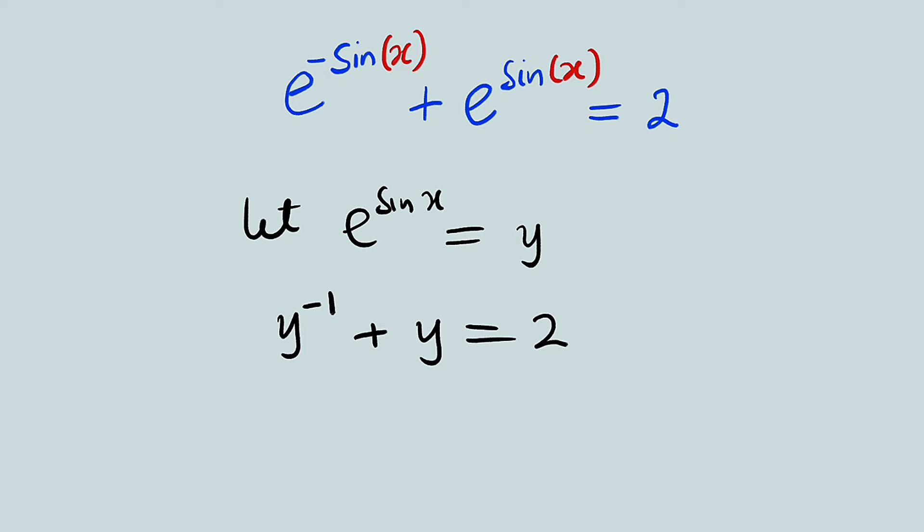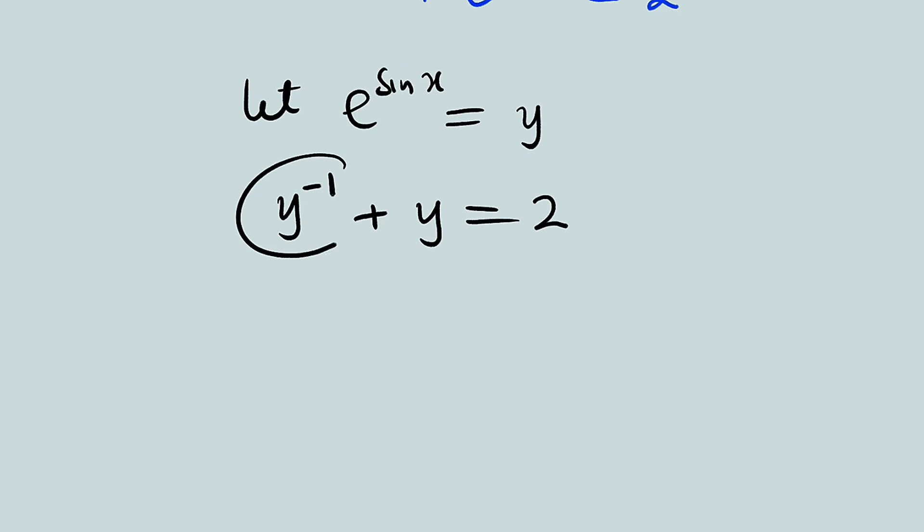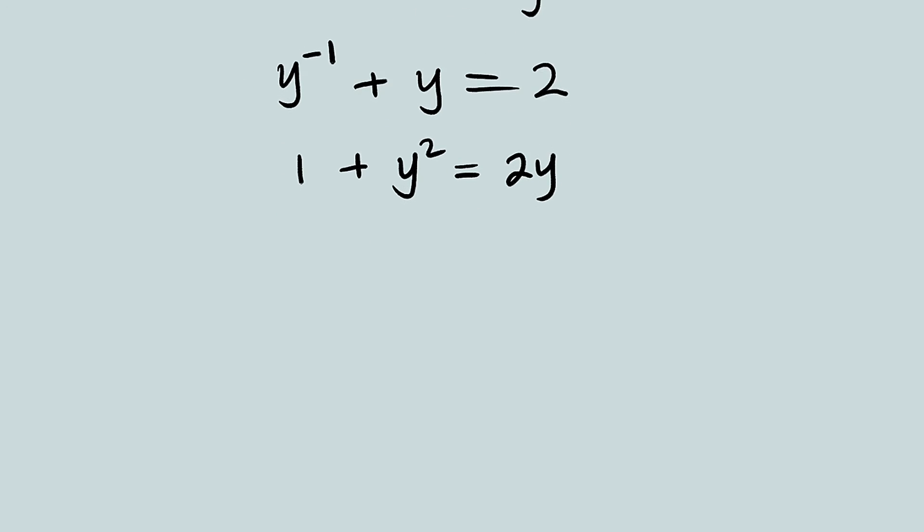We can multiply every single term by y. So, if you multiply this by y, you're going to obtain 1 plus y multiplied by y is y squared. This is equal to 2 multiplied by y equal to 2y. Let us bring every single term to the left-hand side. So, this becomes y squared minus 2y plus 1, and this is equal to 0.